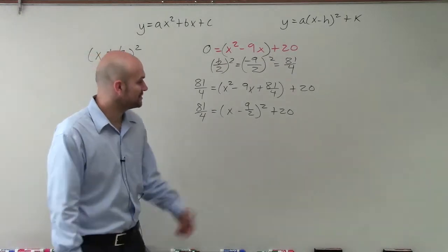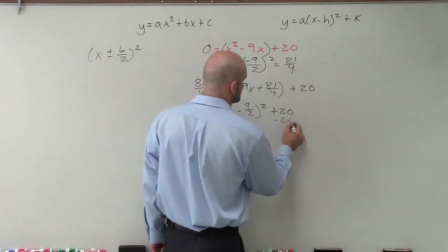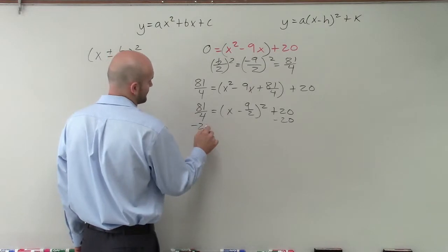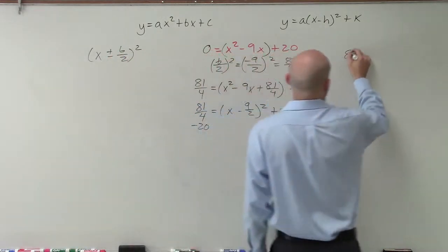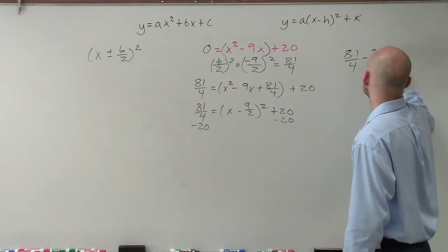So now what we simply do is use our inverse operation. So I need to subtract 20 on both sides. And let's do the work over here. So 81 over 4 minus 20.